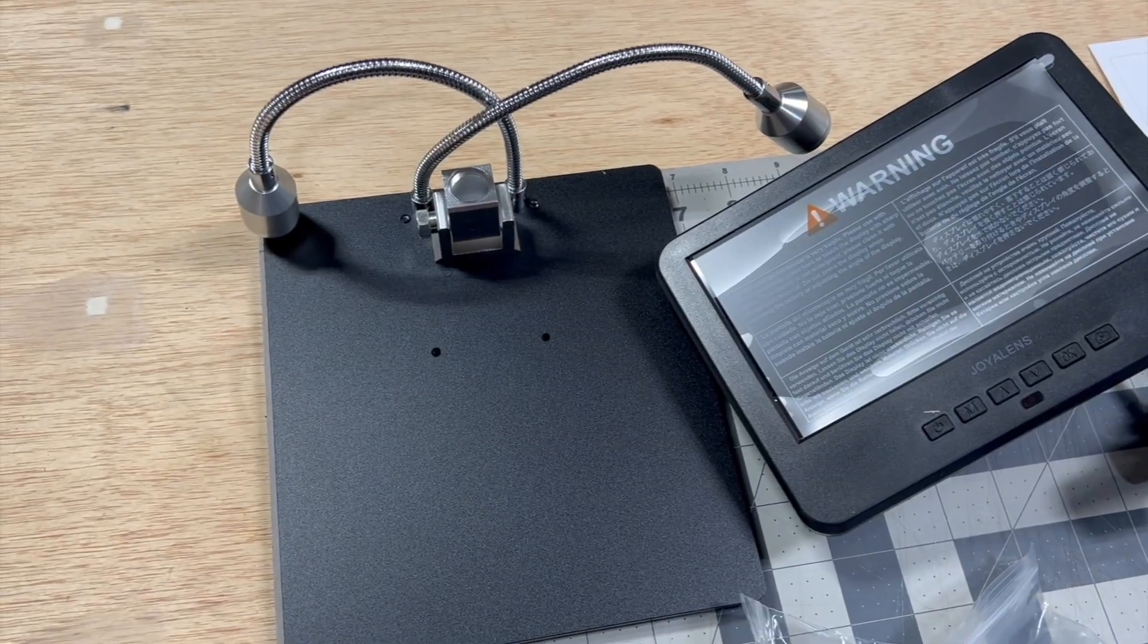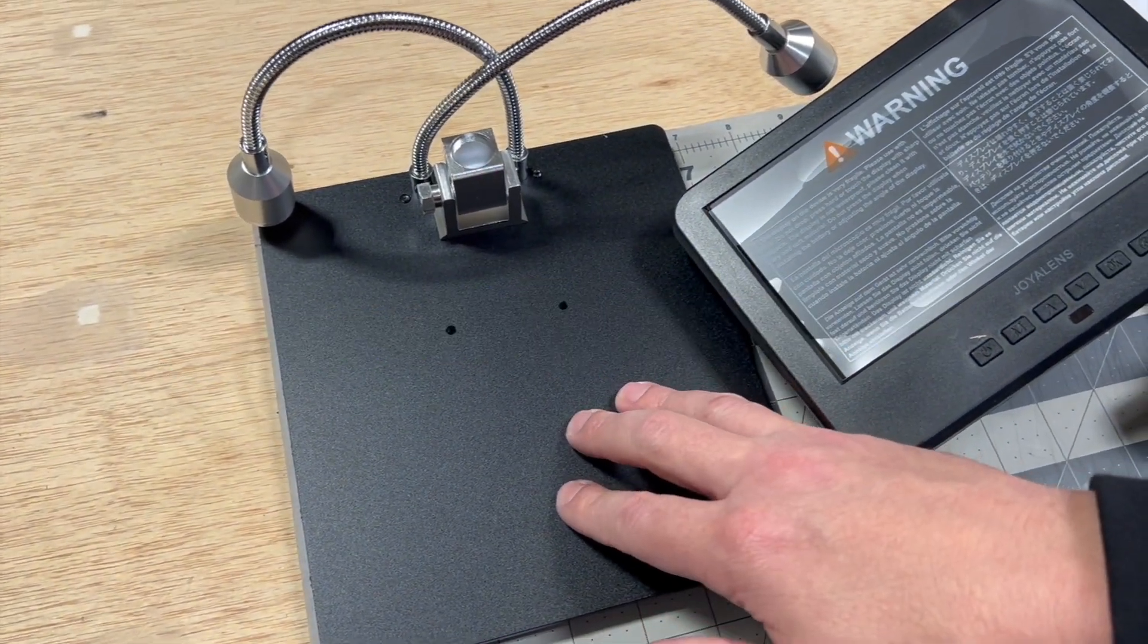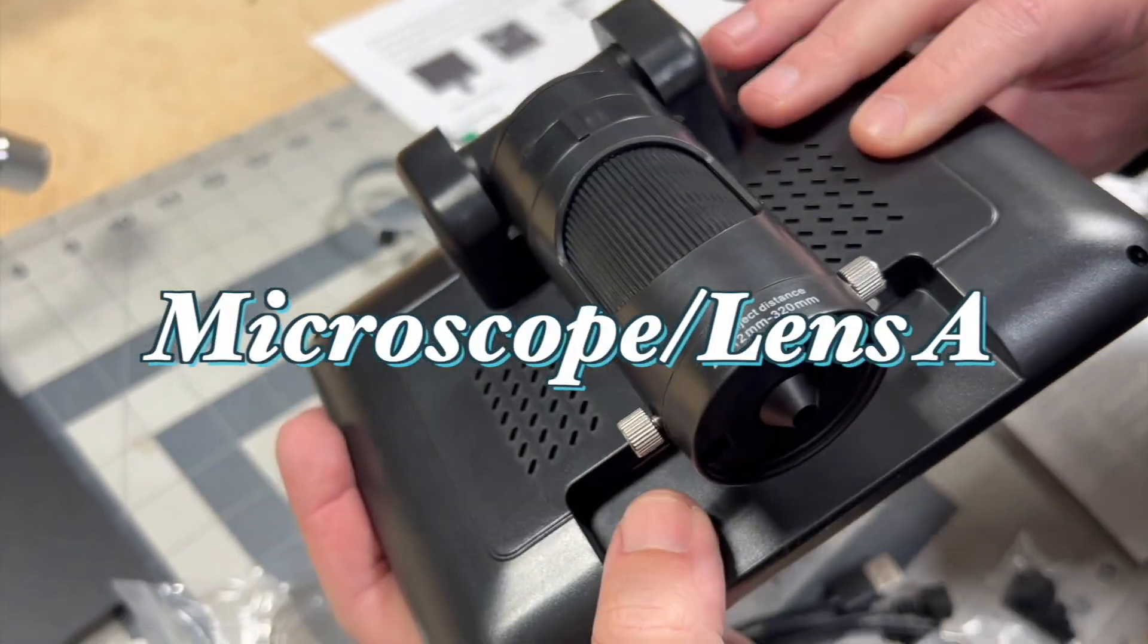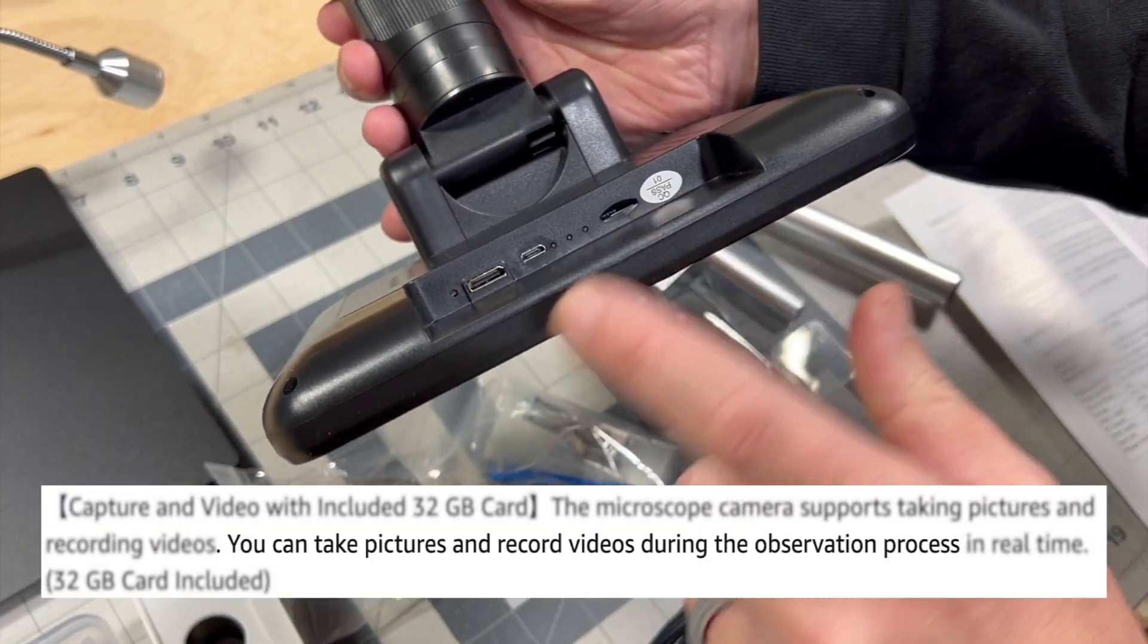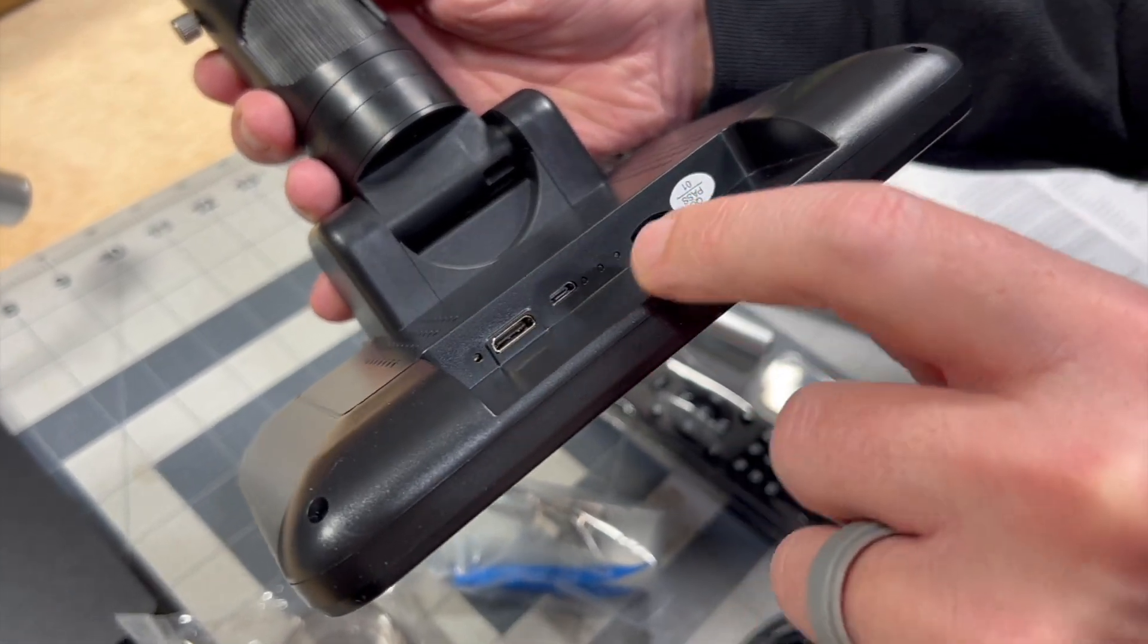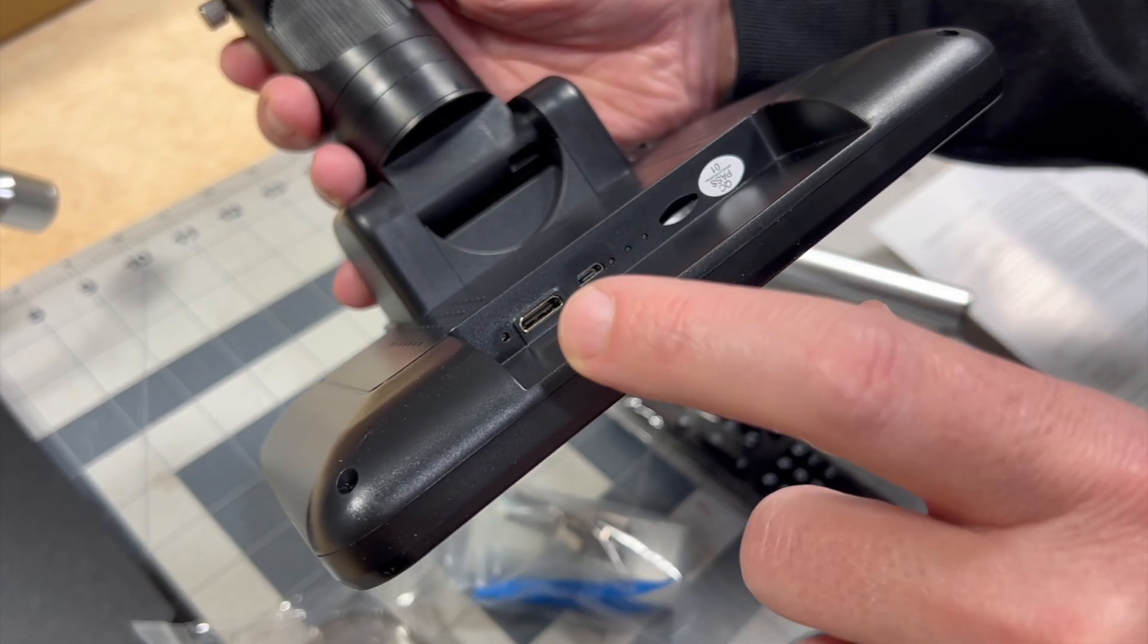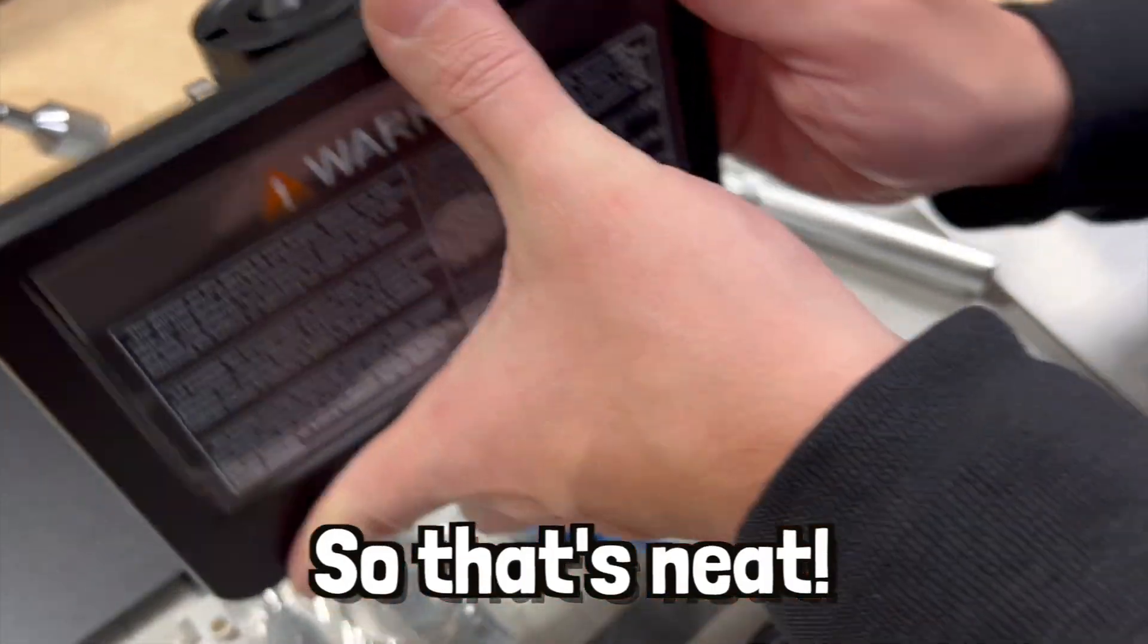Okay, so it actually comes with quite a bit of things. So here's our base that we're going to attach everything to. Right here is our video unit as well as the microscope itself that's connected to it. Really cool about this microscope is you can record on an SD card and it does come with a 32 gigabyte mini SD card. And you can also export it out to a computer via USB or HDMI, which is going to be pretty nice to be able to overlay into our videos when we inspect things.